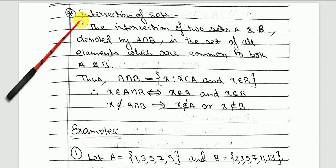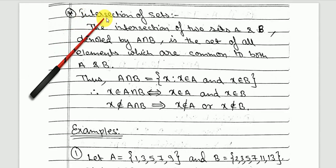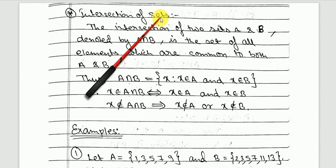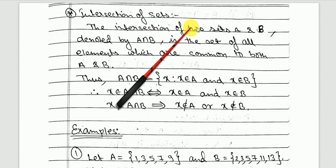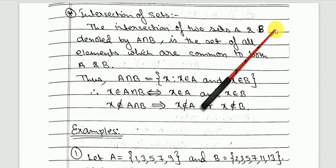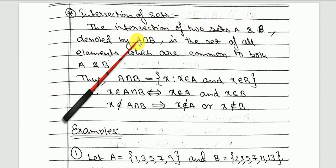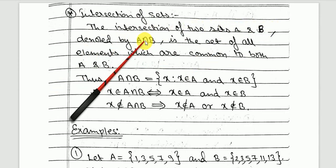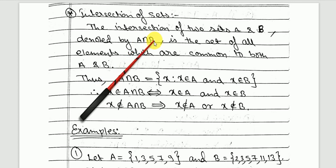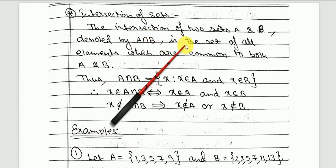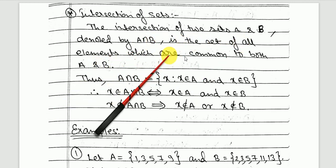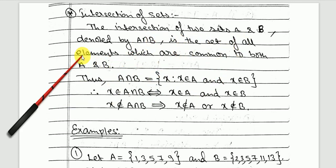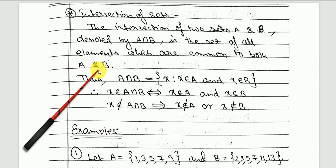Good morning children. Our next topic is intersection of sets. The intersection of two sets A and B, denoted by this symbol, is read as A intersection B, and is the set of all elements which are common to both A and B.